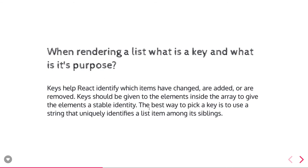Whenever we do iterations — like there is a list component and we are iterating onto the list item component — the key plays a unique role. The key helps React to identify which item has changed, been added, or been removed. The key keeps track of the individual child component of the parent component, helping React to identify which particular child component triggered an event to the parent component and where the state has changed.